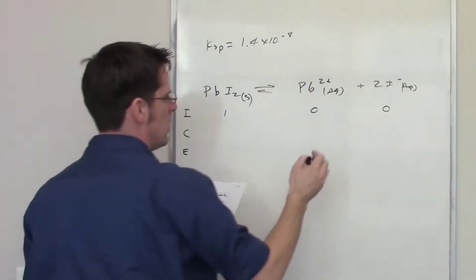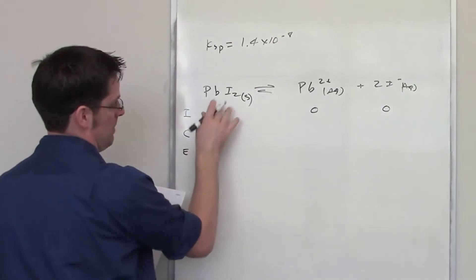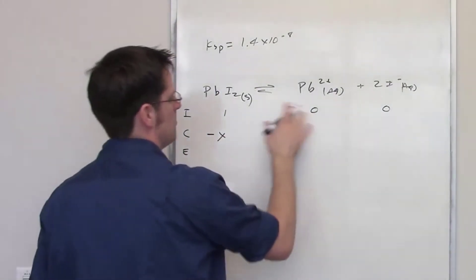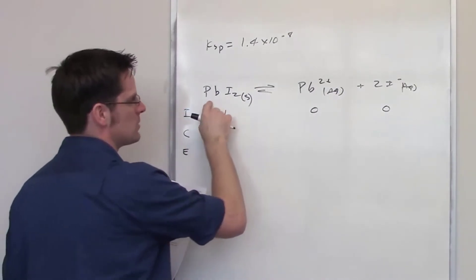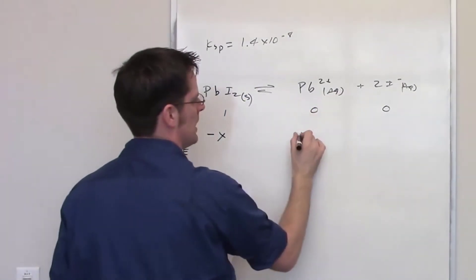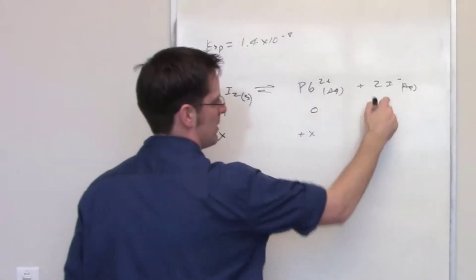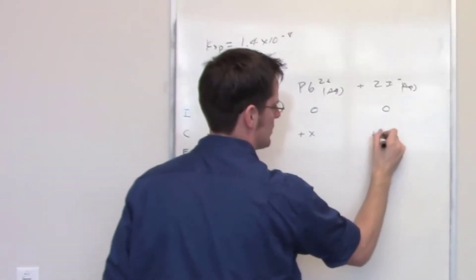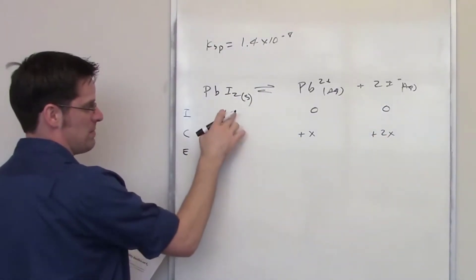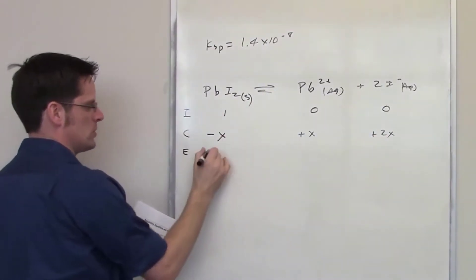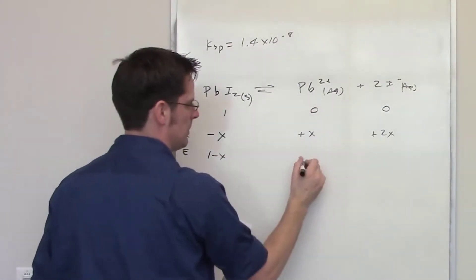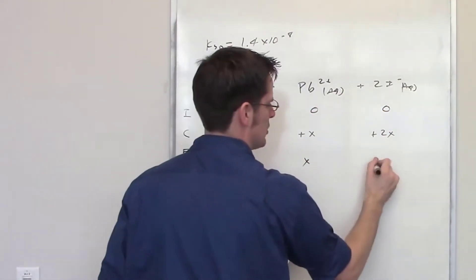The amount by which the solid decreases is going to be negative x. Because the stoichiometry is 1:1:2, it's going to increase the concentration of Pb²⁺ by plus x, and the concentration of iodide by plus 2x. The final equilibrium concentrations are found by adding the initial and change rows: (1−x), (0+x), and (0+2x).